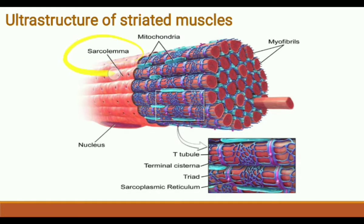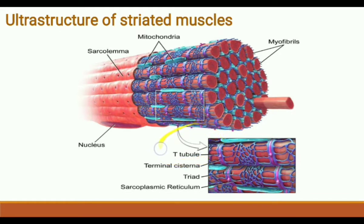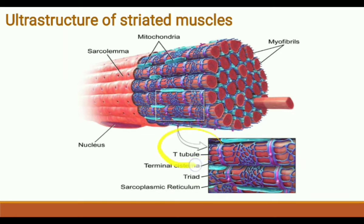The sarcoplasm also contains a network of smooth endoplasmic reticulum called the sarcoplasmic reticulum, and a system of transverse tubules or T-tubules. The T-tubules open to the outside of the fiber and contain a fluid rich in calcium. The expanded ends of the sarcoplasmic reticulum near the T-tubules are called terminal cisternae.